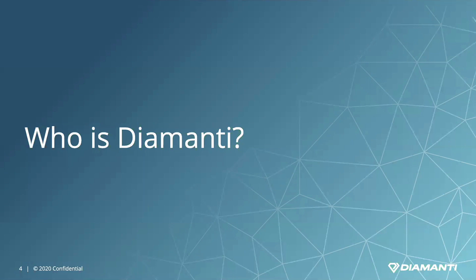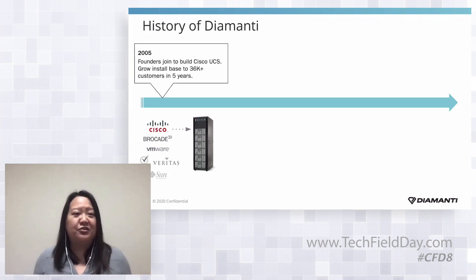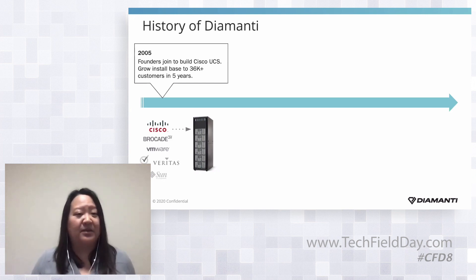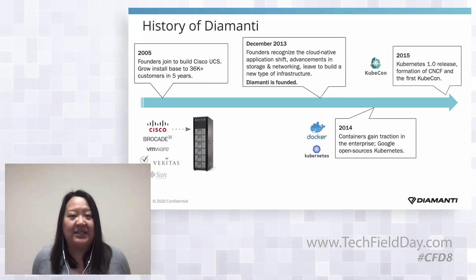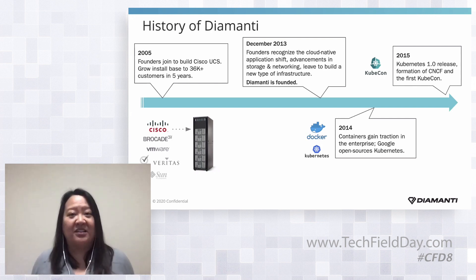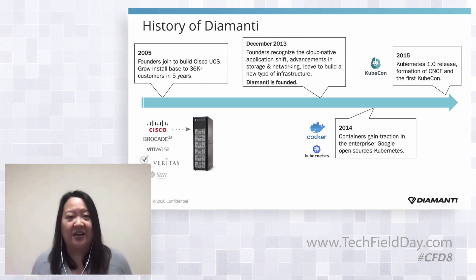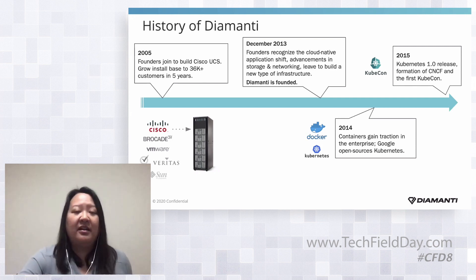Who is Diamante? The origins of Diamante go back to the UCS days at Cisco. A team of industry veterans came together to build that original UCS server, coming from companies like Raritas, VMware, and Brocade. In 2013, they recognized ahead of the curve that the fundamental application paradigm was shifting. The move to cloud-native application designs meant that traditional legacy server architectures were going to be pushed to their maximum when supporting new scale-out distributed apps, so they left Cisco to create Diamante.